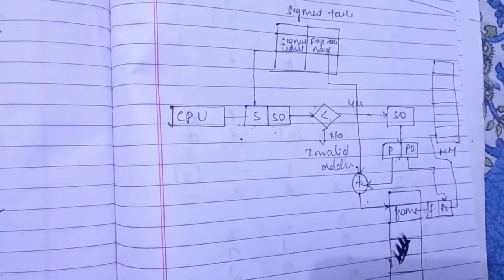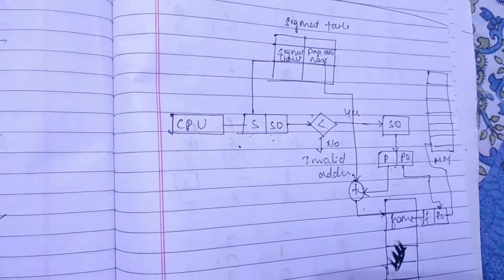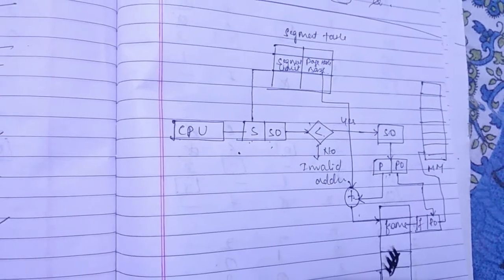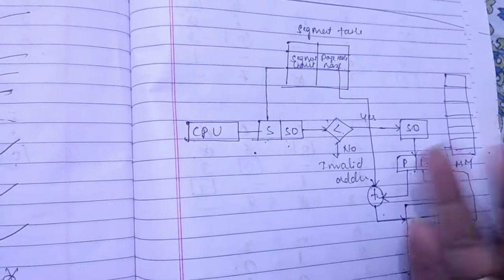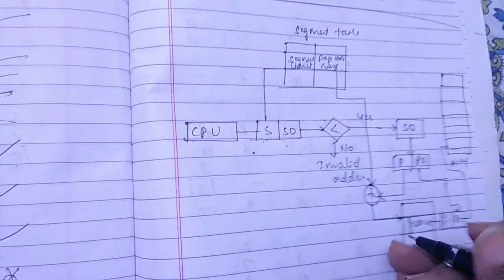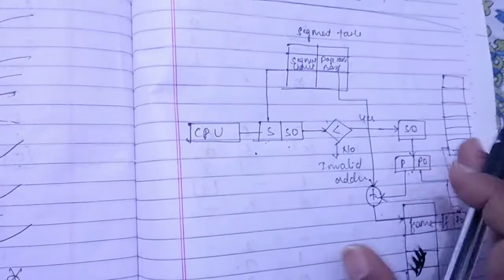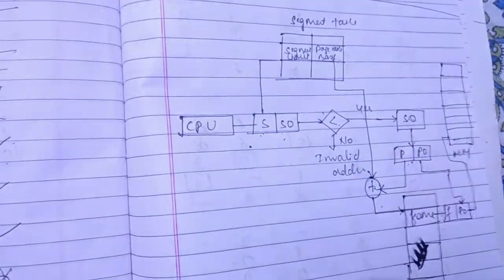And what are the disadvantages of segmented paging? Here we have internal fragmentation in case of segmented paging. And the complexity level will be much higher as compared to paging. And page tables need to be continuously stored in the memory. So these are the few disadvantages of segmented paging. Hope this is clear to you friends.